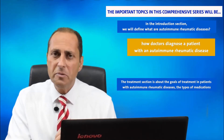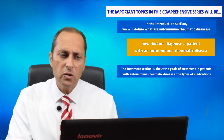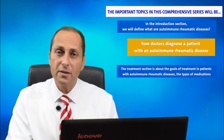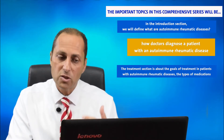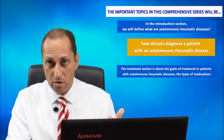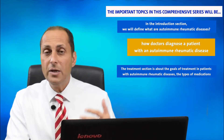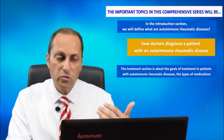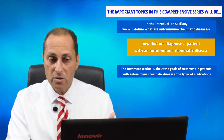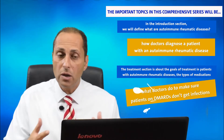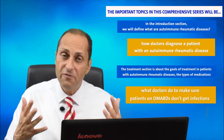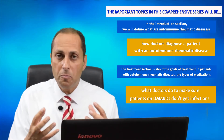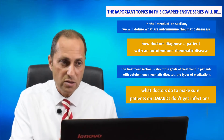Then the treatment section. We start with the goals of treatment in patients with autoimmune rheumatic diseases, and the types of medications used to control and stop the disease. We call them DMARDs — Disease Modifying Anti-Rheumatic Drugs. It's also about the types of medications that control pain until the effect of the DMARDs starts. We will also talk about what doctors do to make sure you don't get infections while using DMARDs, because DMARDs actually suppress your immune system a little bit, which can cause some infections sometimes.